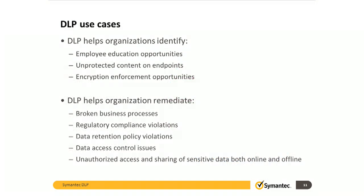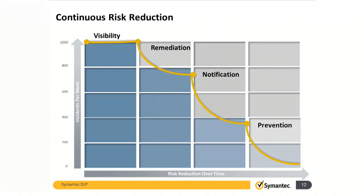Here we see some DLP use cases. Bear in mind the goal of DLP isn't to spy on employees and have reason for termination. The goal of DLP is to minimize data loss through poor practices and protect customer data. In working with our customers over the years, we've developed a proven methodology for measurably reducing their data loss risk. It's made up of four key stages: visibility, remediation, notification, and prevention.